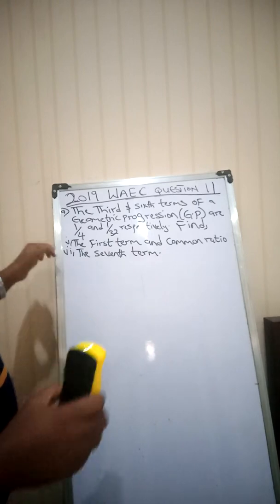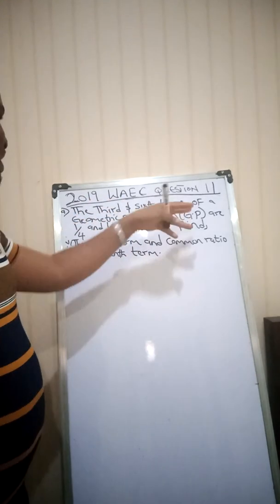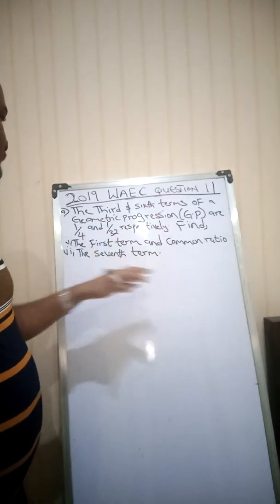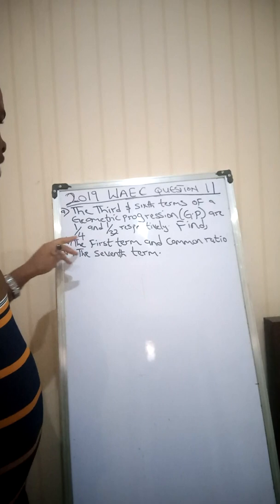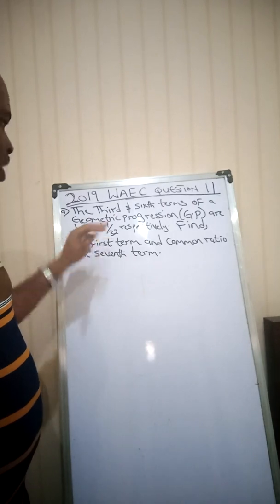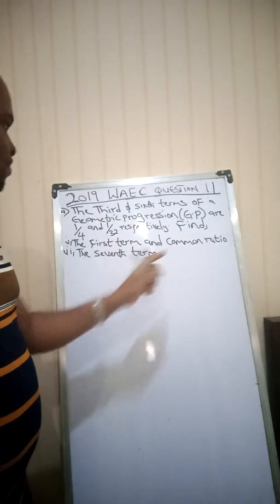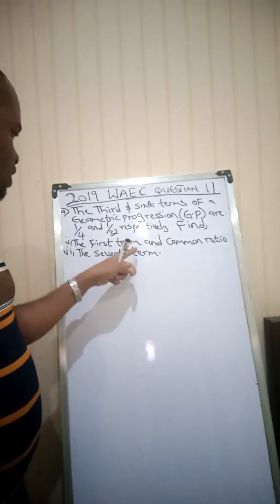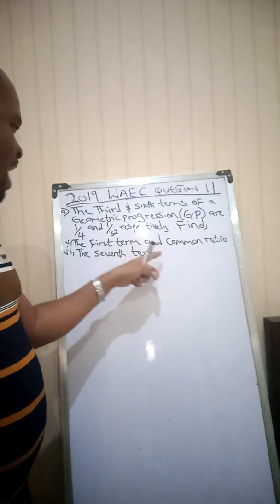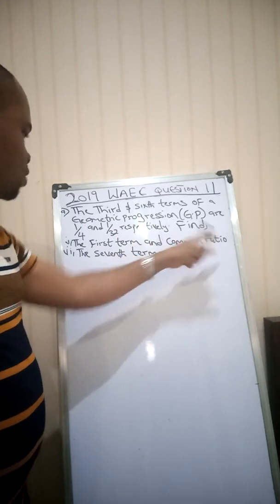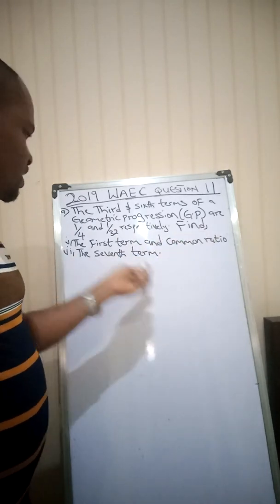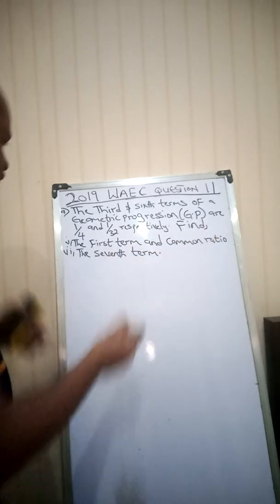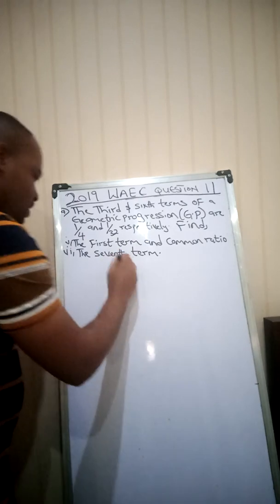The question says: the third and sixth term of a geometric progression are 1/4 and 1/32 respectively. Find: (1) the first term and common ratio, and (2) the seventh term. Let's quickly solve this.